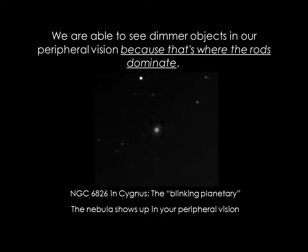When you walk into a dark space, it takes about 10 minutes for your eyes to adjust. This is the amount of time that the rods need to activate and take over for the cones. We are able to see dimmer objects in our peripheral vision because that's where the rods dominate. For example, if you see a dim star in your peripheral vision, it may disappear when you look at it directly, since you are moving the image onto the cone-rich fovea region, which is less light-sensitive.